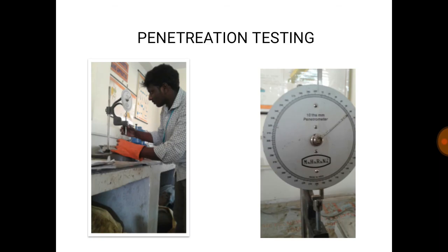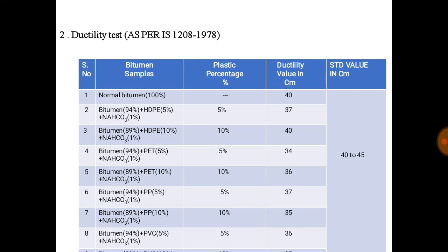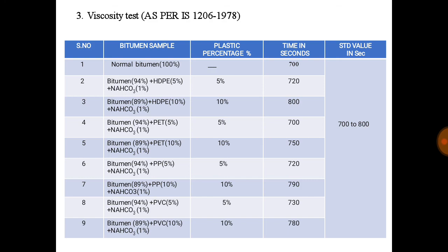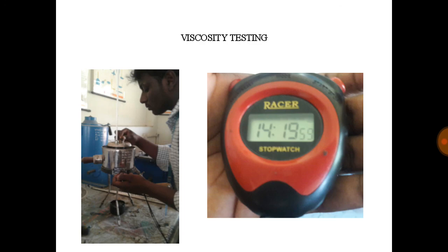These are the plastic testing images. This is the ductility testing as per IS 1208:1978, along with the ductility testing images and testing tables. HDPE at 10% gives the best result in the ductility test as well.